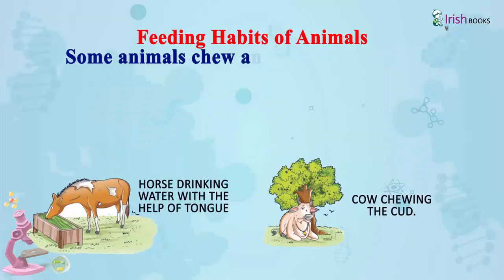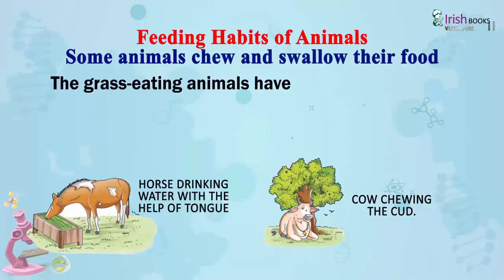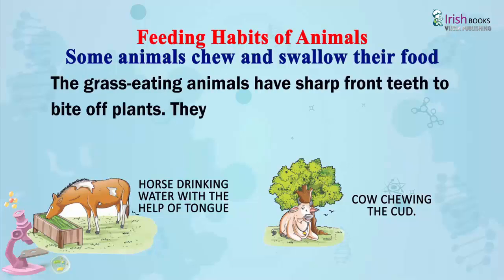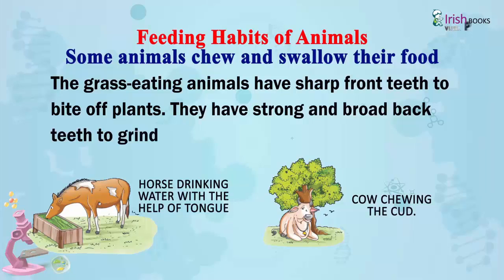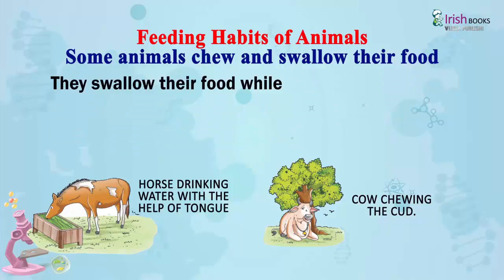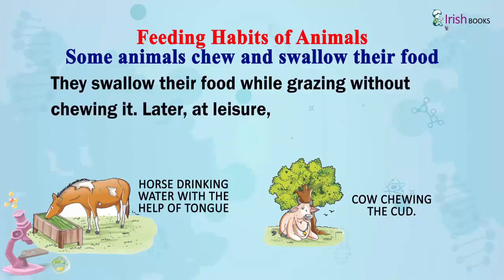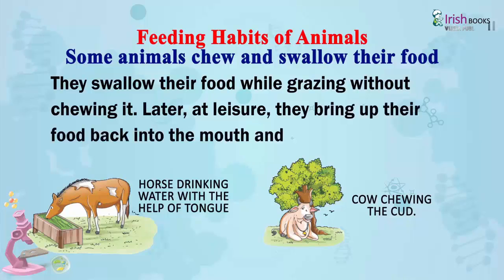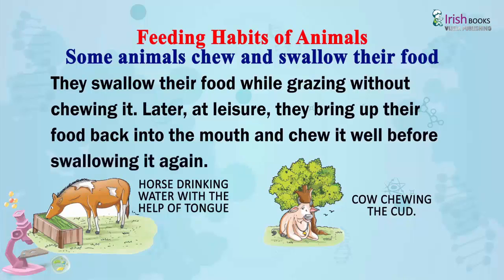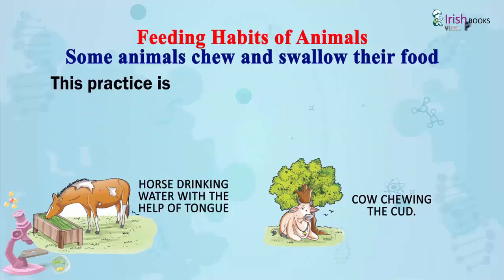Some animals chew and swallow their food. Grass-eating animals have sharp front teeth to bite off plants, and strong broad back teeth to grind and chew their food. They swallow their food while grazing without chewing it fully. Later, at leisure, they bring the food back into the mouth and chew it well before swallowing it again. This practice is called chewing the cud.